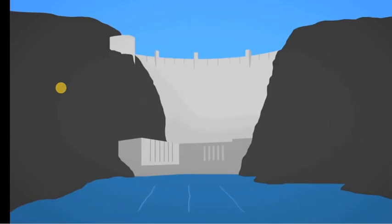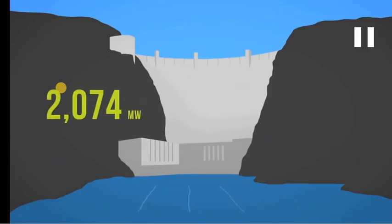The Hoover Dam in the United States produces a whopping 2,074 megawatts — but we're not in the USA. Do you guys know which dam we have here in Namibia that is used to produce electricity? You will tell me in the lesson — for Grade 9s, you must know, since we went there last year. For Grade 8s, I hope you have an idea where this dam is.